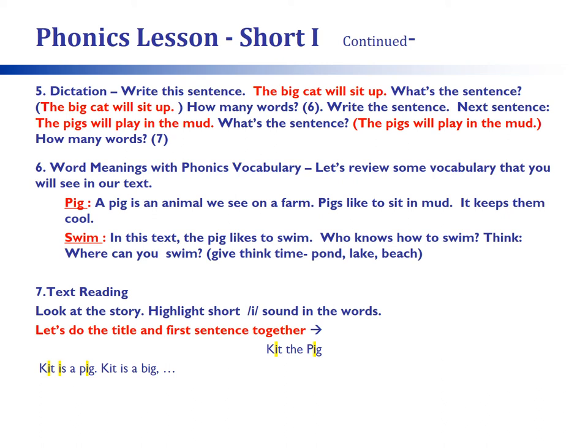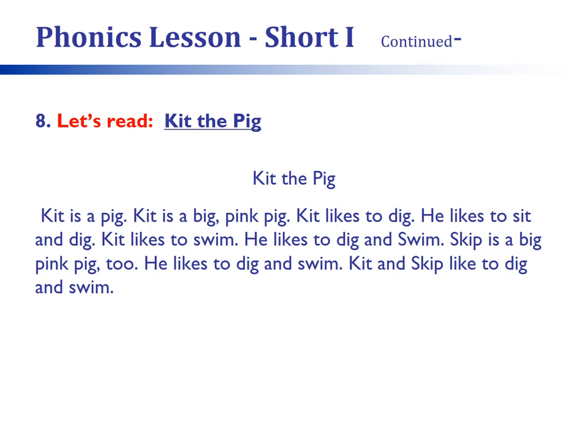The example has the short I sound highlighted in the title and the first sentence and would serve as the 'I do.' A gradual release of responsibility to the student will occur as the student continues to read. This final part of the lesson is critical as we want students to be able to see the sounds and words they've been working on in context. Students can read chorally as a group, read to a partner, or read silently. The goal is for students to become fluent with the short I sound.